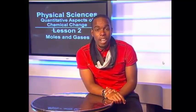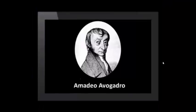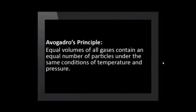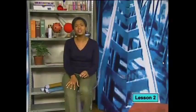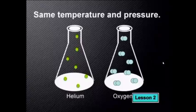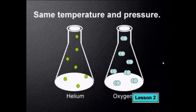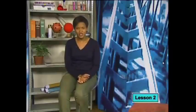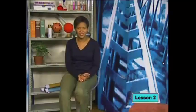This phenomenon was explained by a scientist known as Amadeo Avogadro. He hypothesized that equal volumes of all gases at the same temperature and pressure have the same number of molecules. Avogadro's principle states that equal volumes of all gases contain an equal number of particles under the same conditions of temperature and pressure. This rule is true for all gases. If you have a gas cylinder filled with helium gas and a gas cylinder filled with oxygen gas, by applying Avogadro's principle, if these gases are at the same pressure and temperature, there will be the same number of gas particles in each cylinder.